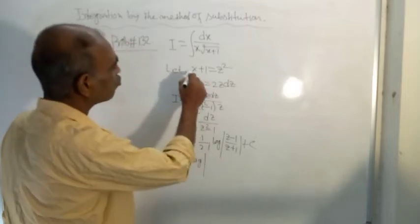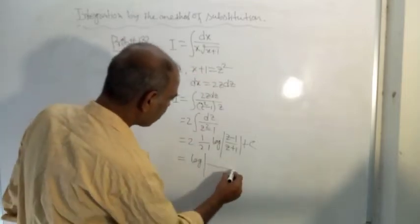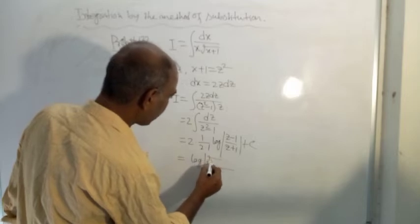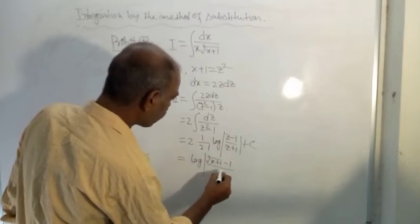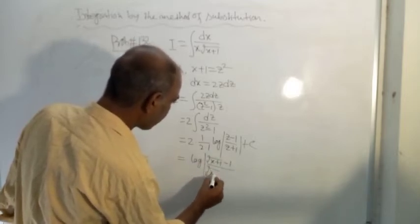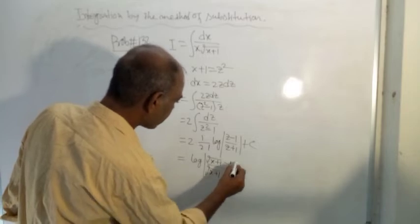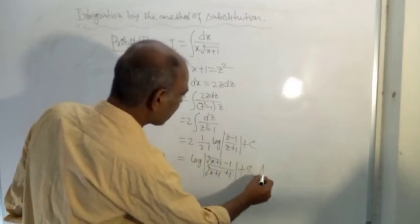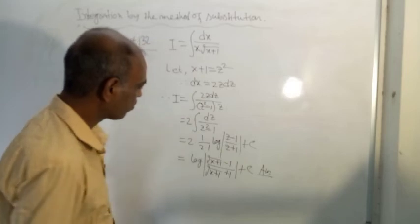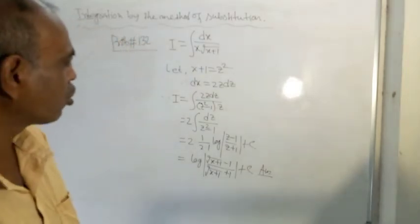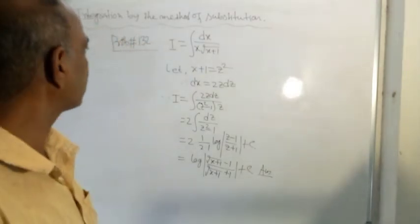And z is root of x plus 1. So the answer is log of root of x plus 1 minus 1 divided by root of x plus 1 plus 1. This is the answer to the given problem.